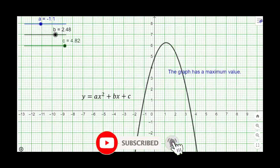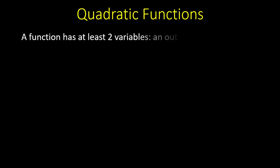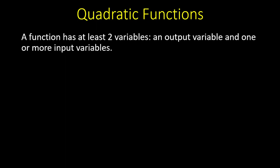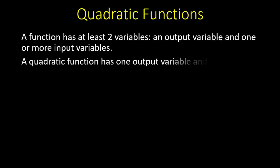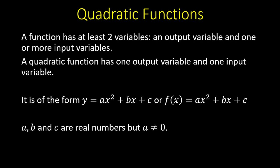A function has at least two variables: an output variable and one or more input variables. A quadratic function has one output variable and one input variable. It is of the form y = ax² + bx + c, or f(x) = ax² + bx + c, where a, b, and c are real numbers.